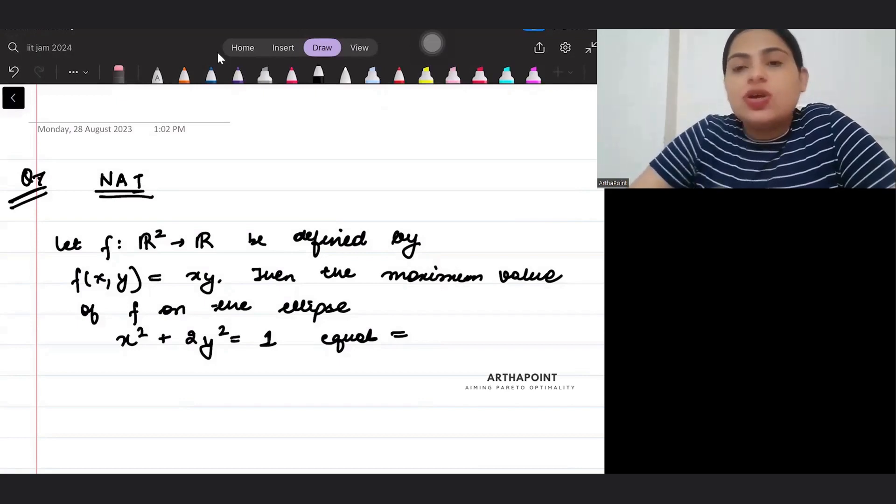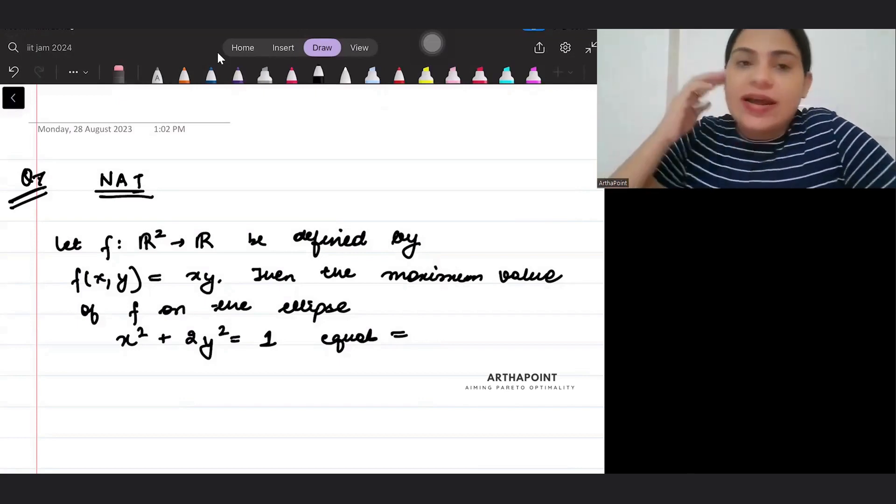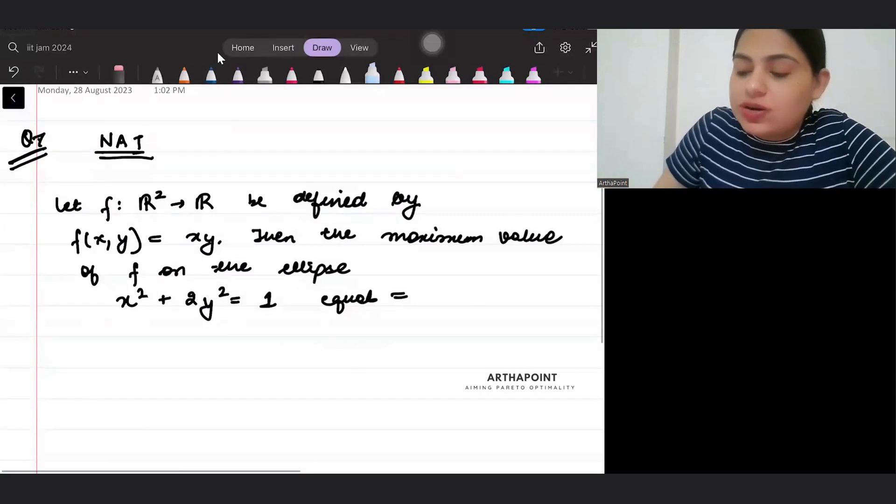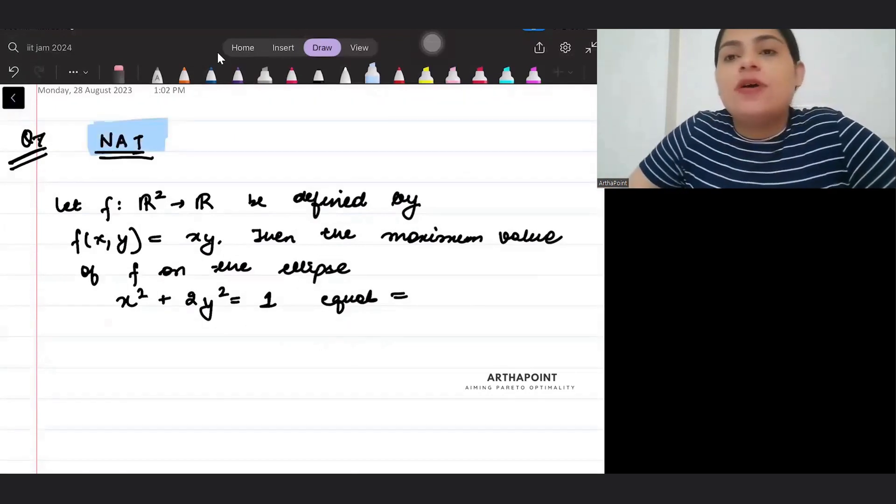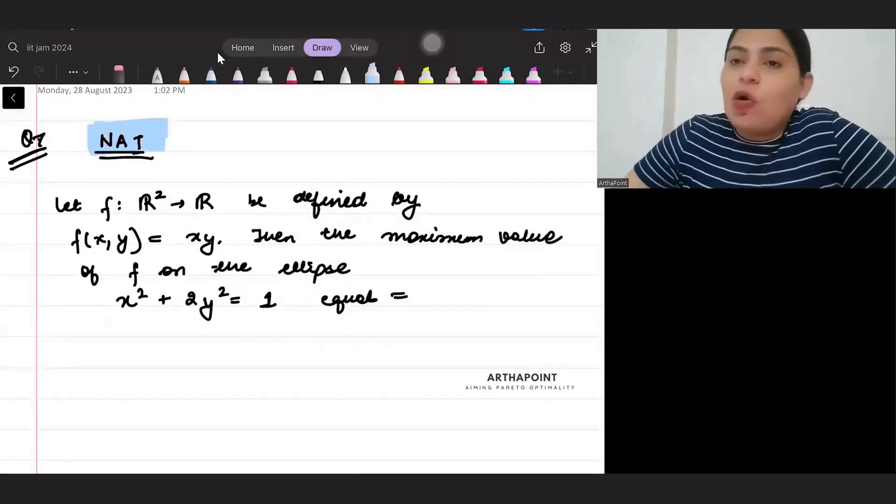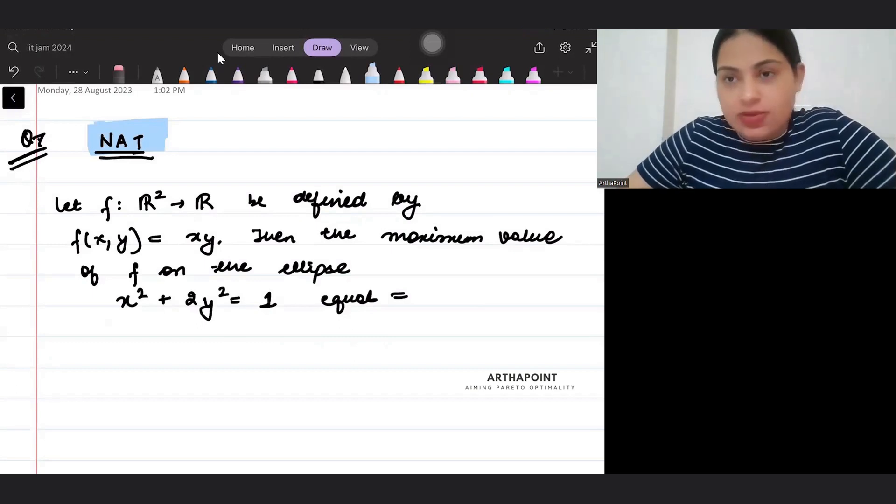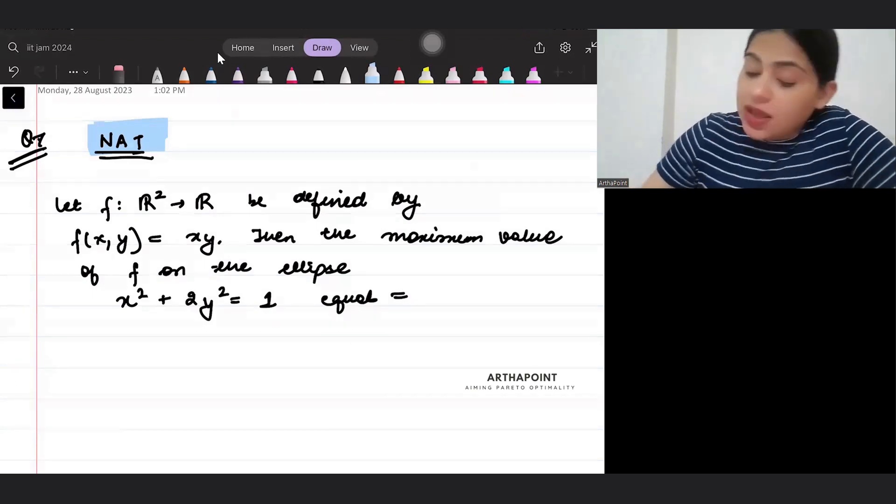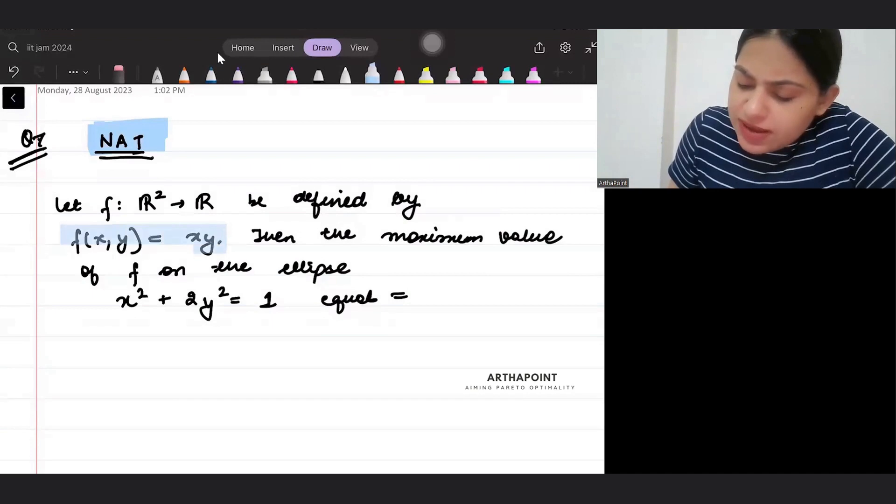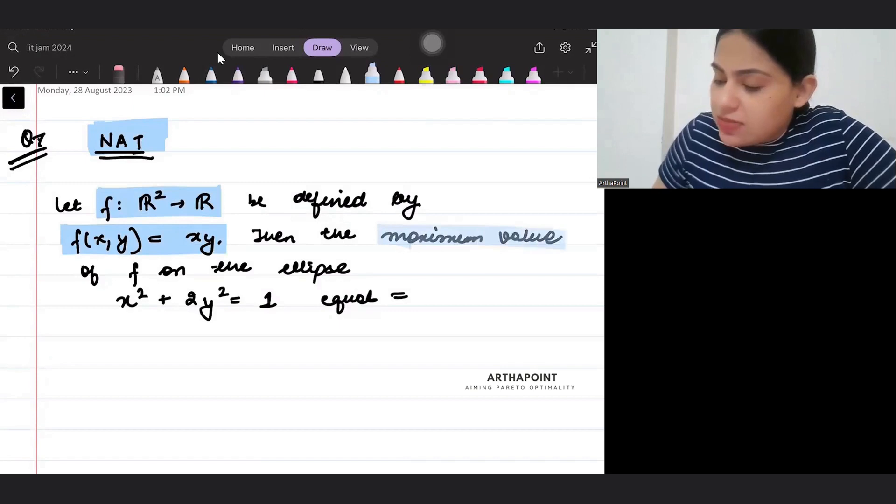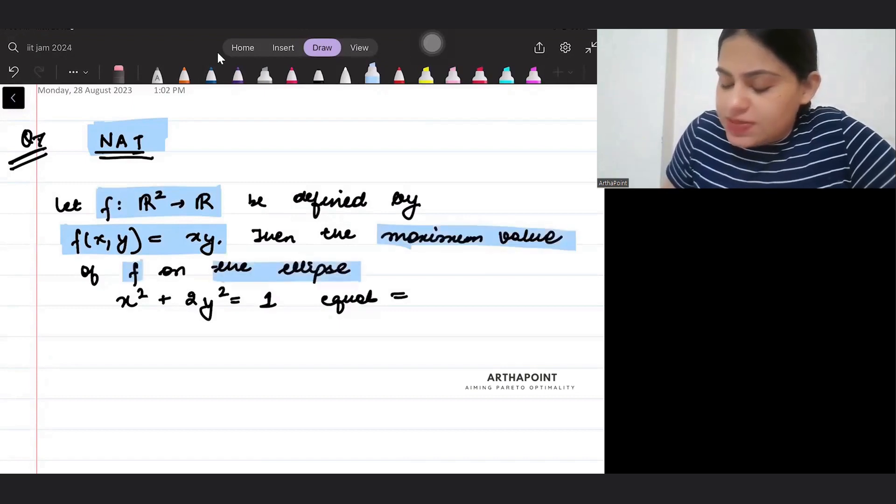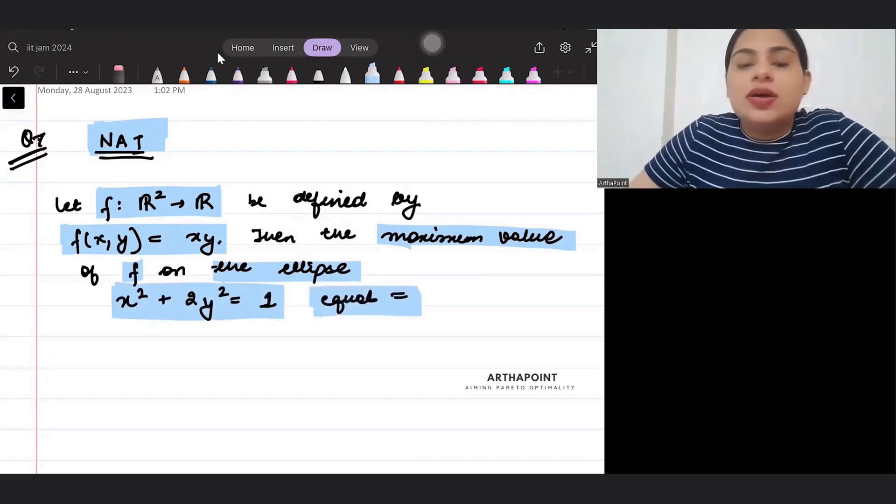Hello, good morning everyone. Today we will take one more question and this is going to be based on your NAT type of questions of GATE Economics and of your IIT JAM Economics. Let's look at the question. It says your function is given by x y and function goes from R square to R, then the maximum value of the function on the ellipse x square plus 2y square is equal to 1.